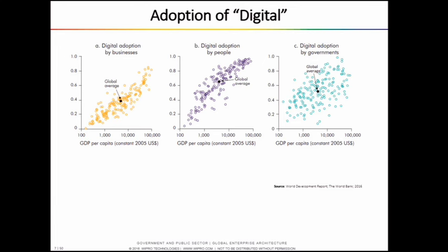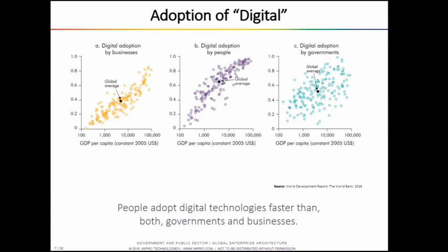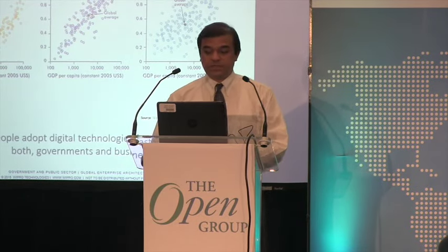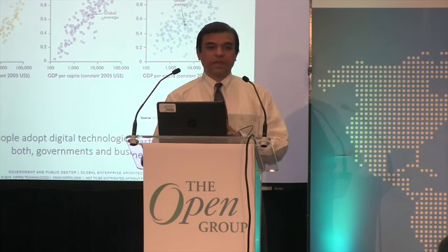Here is a World Bank survey showing the adoption of digital technologies, comparing corporate businesses, citizens at large, and governments. The graph shows that adoption of digital technology by people is higher than by governments and businesses at the individual level. Each of us is probably carrying three to five digital devices right now. So there is some level of catching up that needs to be done by governments and businesses in terms of adoption of digital technology, which makes things very complex.